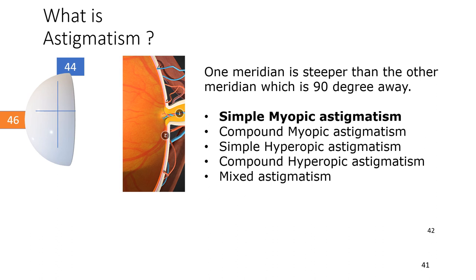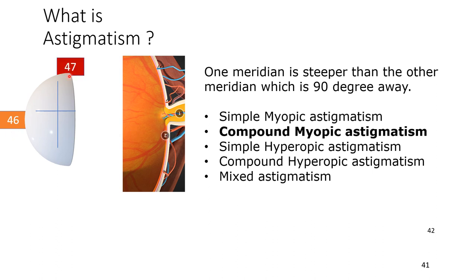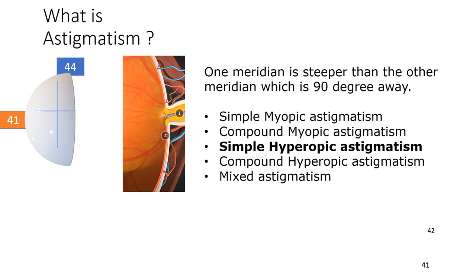Astigmatism can also be classified by the focal relationship with the retina. In simple myopic astigmatism, one meridian is at normal average corneal power (44 diopters) while the other is steep, so rays through the steep meridian fall before the retina. In compound myopic astigmatism, both meridians are steep and rays from both fall before the retina.